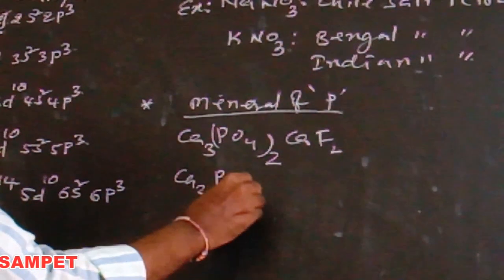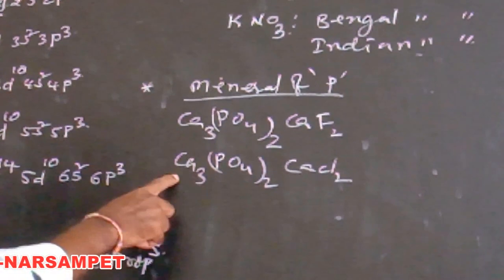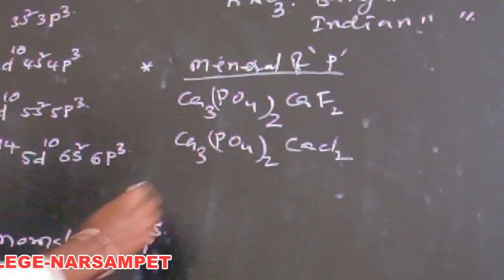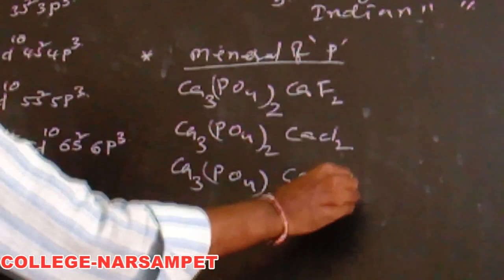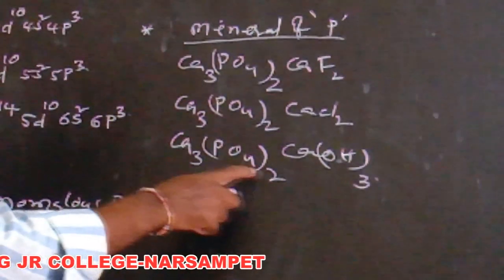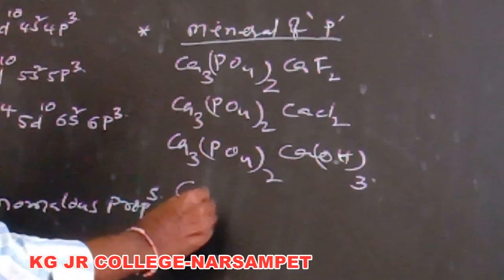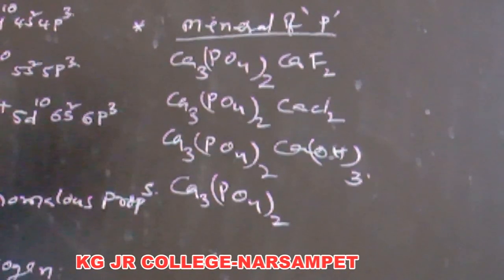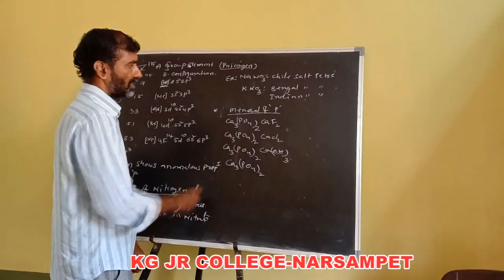Additional phosphorus minerals include hydroxyapatite — Ca3(PO4)2·Ca(OH)2 — and phosphorite rocks — Ca3(PO4)2. These are the main important minerals of phosphorus.